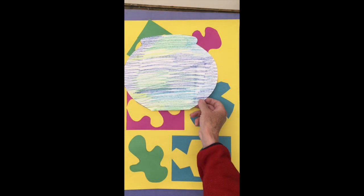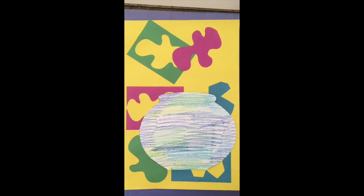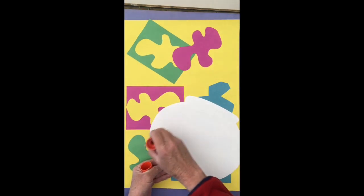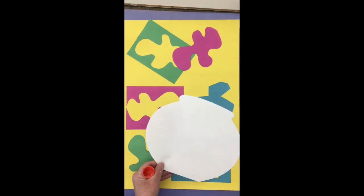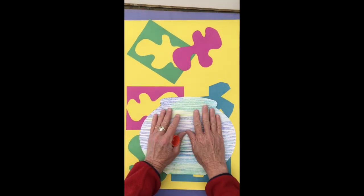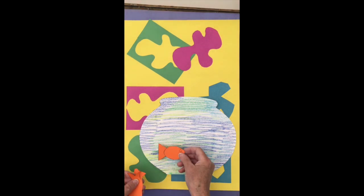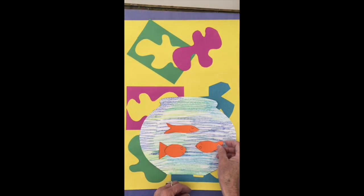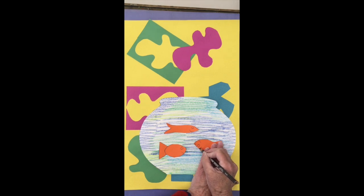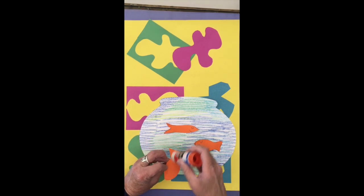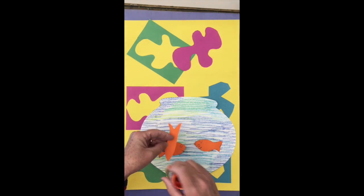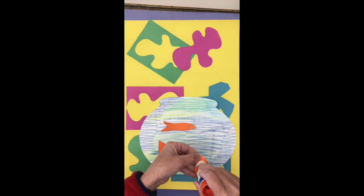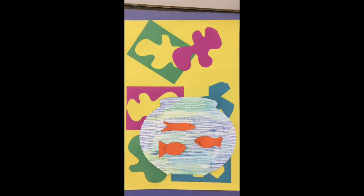Now I'm going to put the whole thing together. I've got my fish bowl. I'll put it on top of my pretty design from the day before. I'll get some glue and make sure that my fish bowl is going to stay on. Then I'll get my three little fish and just like before I'll move them around and decide where I want them, then glue on the back of those until everything is glued down and lovely. And there you have it, an artwork inspired by Matisse's goldfish bowl.